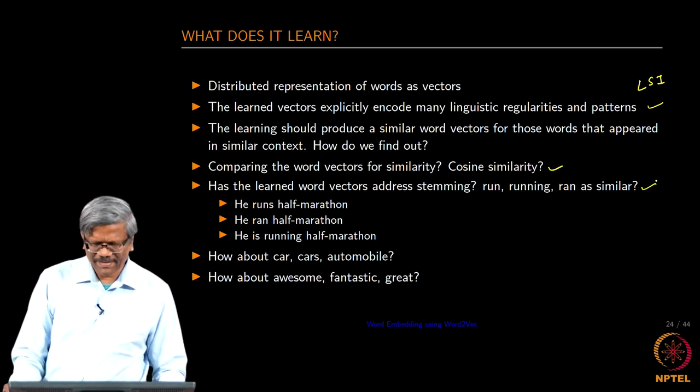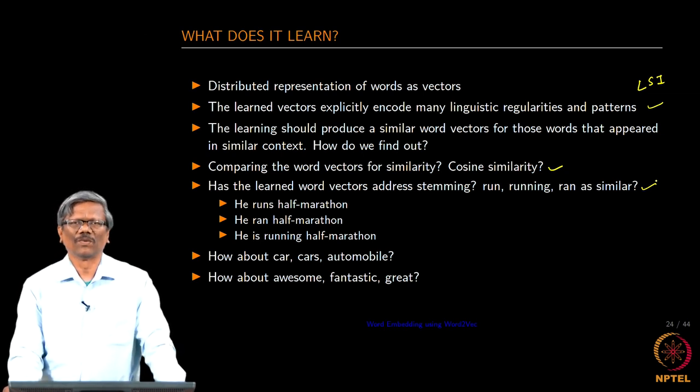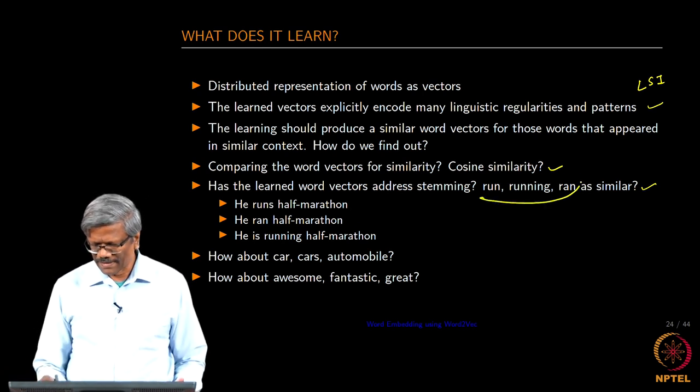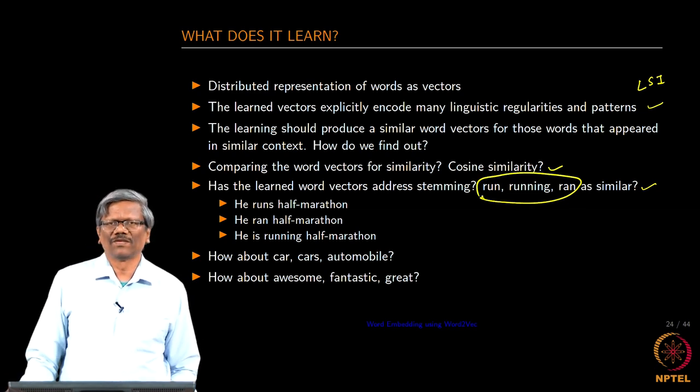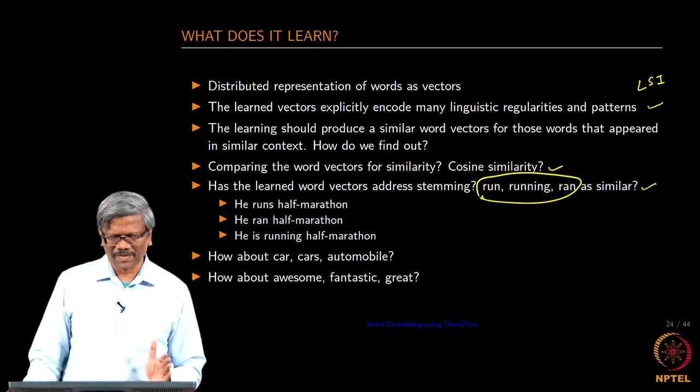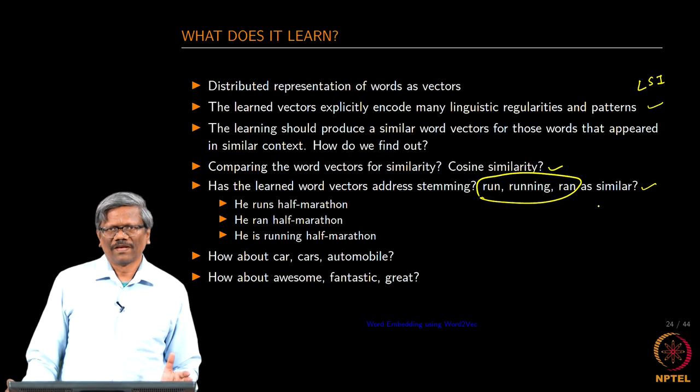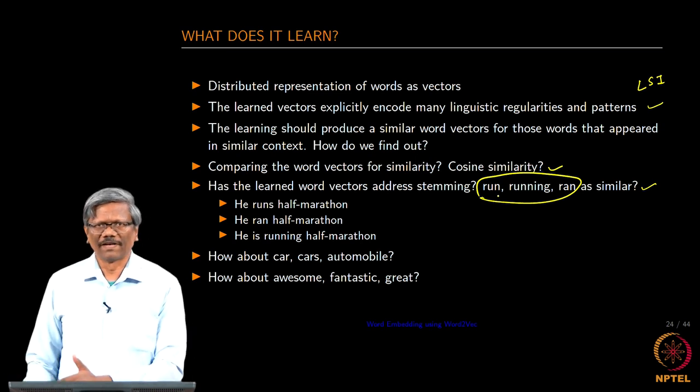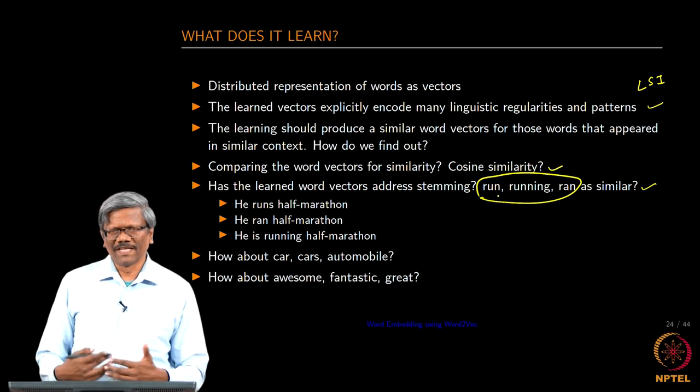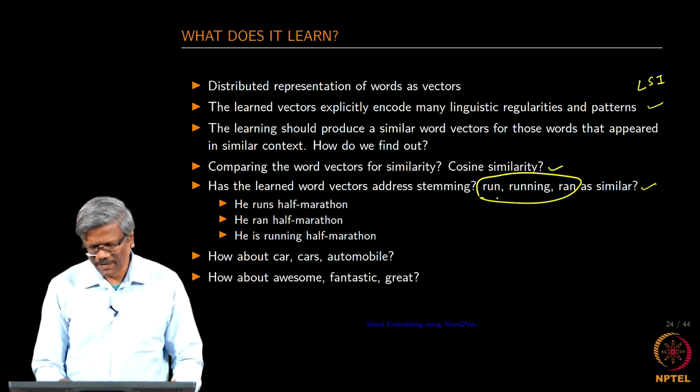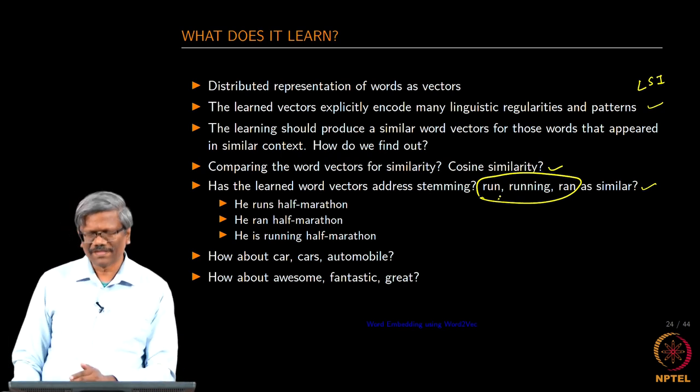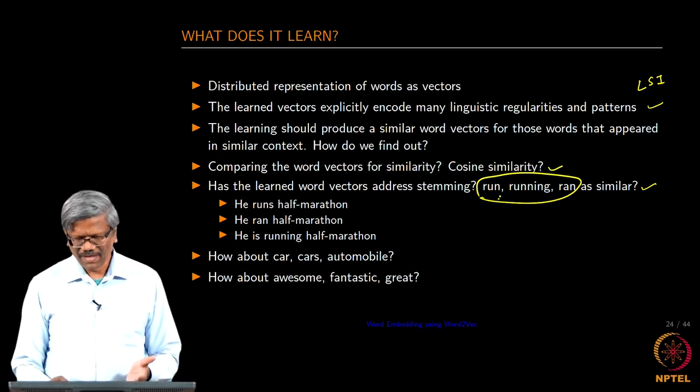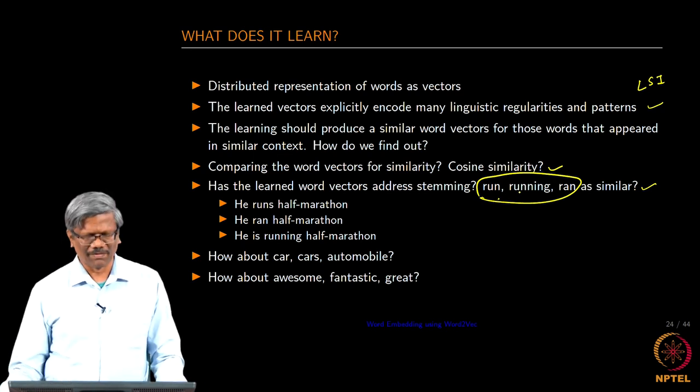Does it address stemming like run, running, ran and so on? This really requires the context to be similar in order for us to really combine these similar words right. We definitely require a large corpus that keep using these words in similar context. If we have different context for each of this word I am sure no network will really find them out. Our assumption is based on the food these words can be known by the company it keeps that means, this the context words surrounding these run, running and ran would be very similar only if they are similar we would be able to take these as similar words.